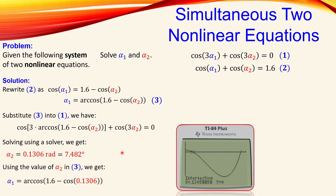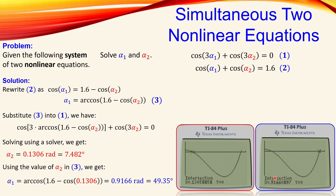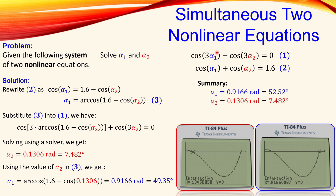Once we have α₂, we can calculate α₁ using equation 3. Substituting the value we just determined into arccos(1.6 − cosine of α₂), and keeping the accurate value on the calculator display, we get α₁ equals 0.9166 radians, or approximately 49.35 degrees. This is confirmed by the second intersection visible in the graph.